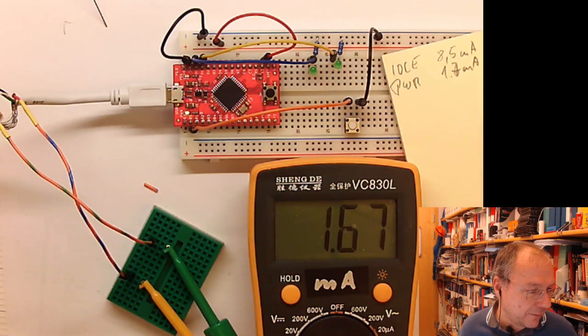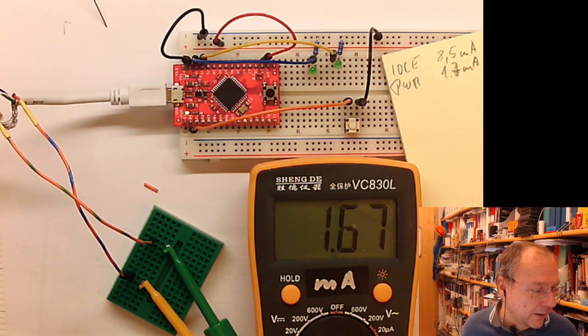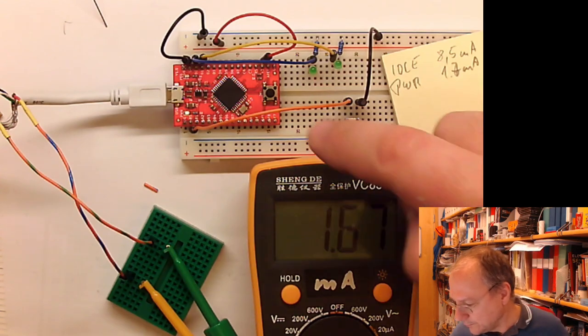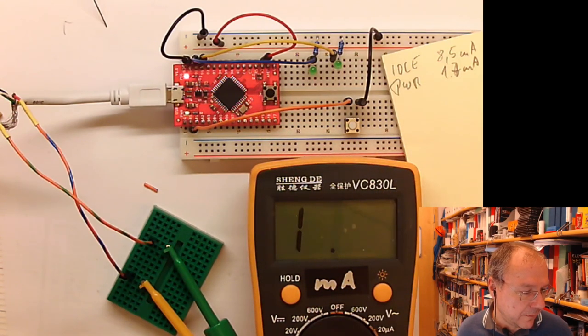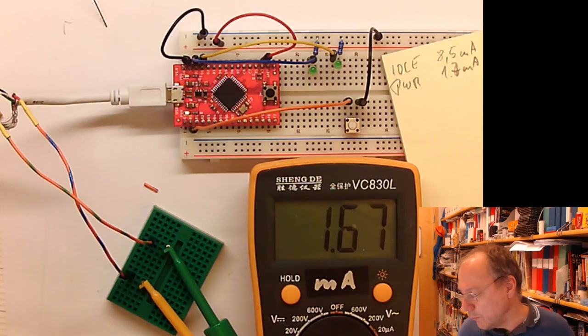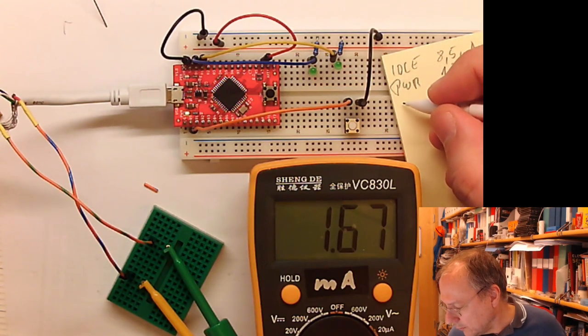But let's try what happens if we choose the power save or the standby mode. I actually have no idea. Hi Eric. And so we put it here and we compile and we upload. And the new code is running and we see it's the same 1.6, 1.7 milliamps.